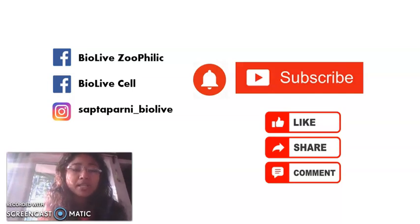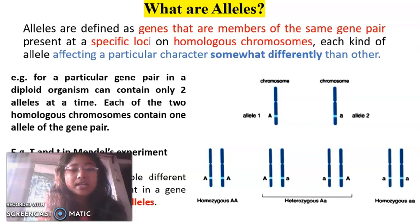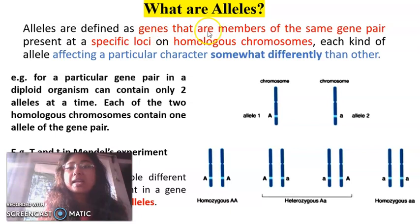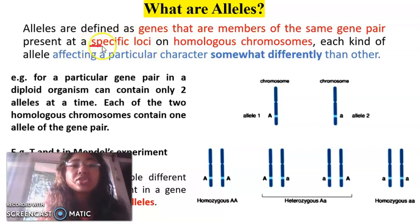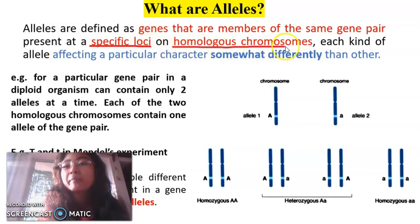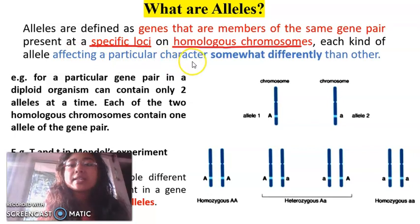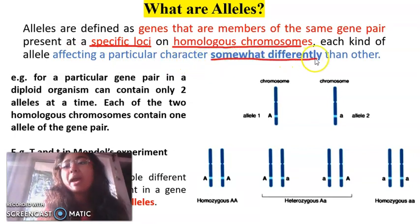Without further delay, let's begin. Before knowing what isoalleles are, we must know the concept of alleles. Alleles are defined as the genes that are members of the same gene pair, present at a specific loci on homologous chromosomes.